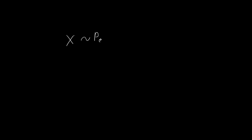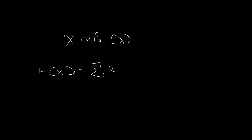Let's say the random variable x follows the Poisson distribution with parameter lambda. Now in order to find the expected value, by definition, this is just equal to the values that x can take on — let's represent that by k — multiplied by each value's corresponding probability.